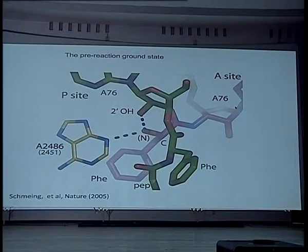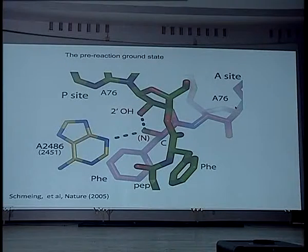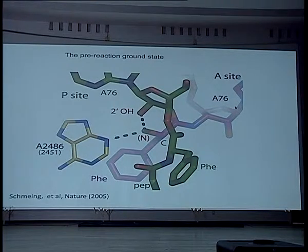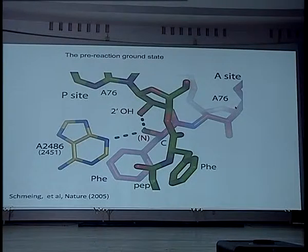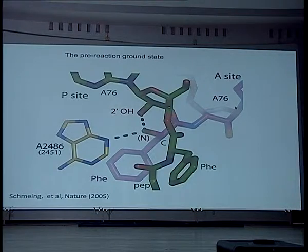What is it doing chemically? Well, we saw that this base was there interacting — we thought maybe that's involved. But it was shown by other labs that by mutating this, you can change it to any other base and it doesn't change the reaction. So that's not involved. So the only thing that's left is this 2' hydroxyl, which comes from the P-site substrate, the C-76 of the P-site substrate. So is that doing anything?